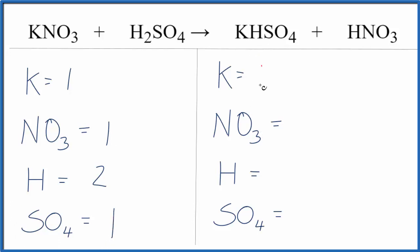Over on the product side, we have one potassium nitrate, that NO3. We have one of those. Hydrogens, and be careful here, we have one hydrogen here, plus we have the one hydrogen here. So that gives us two hydrogens, and then SO4, the sulfate group, we only have one.